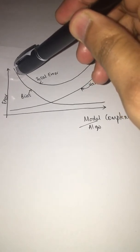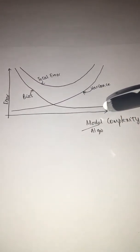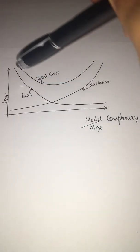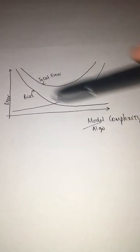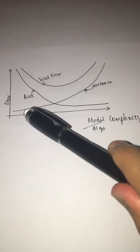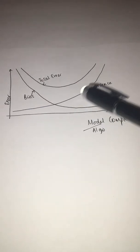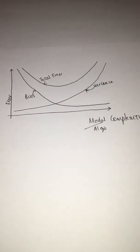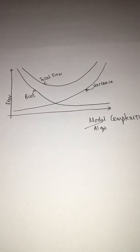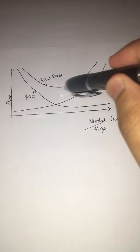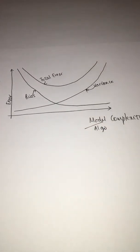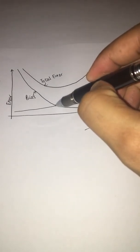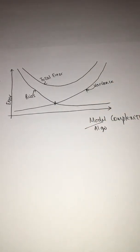This curve represents bias. As your model complexity increases, your bias reduces. Similarly, this curve represents variance — as your model complexity increases, your variance increases. What we want is basically the point where the bias and the variance curves intersect, which is that sweet spot where you have a balance between bias and variance.